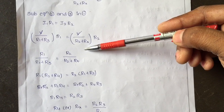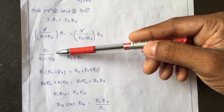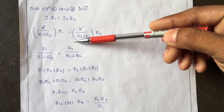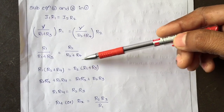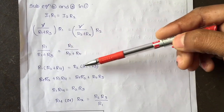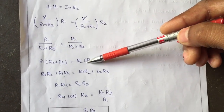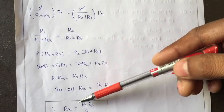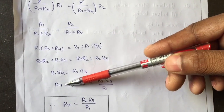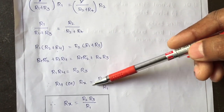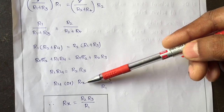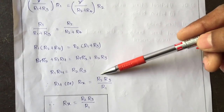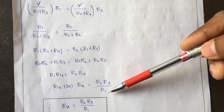Cross-multiplying, our aim is to calculate the unknown resistance R4 — which is denoted as Rx. After cross-multiplication we finally get Rx = R2·R3 / R1.